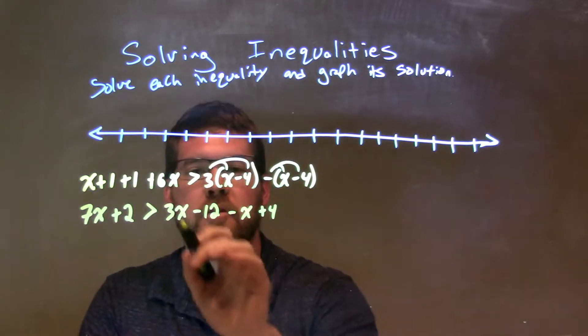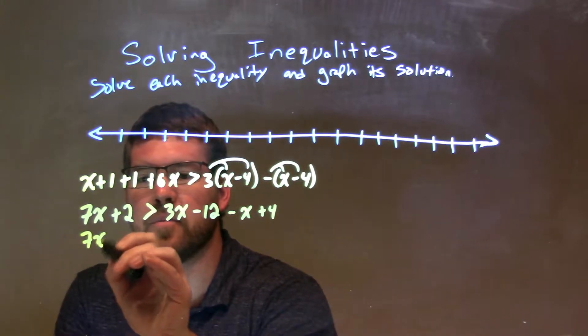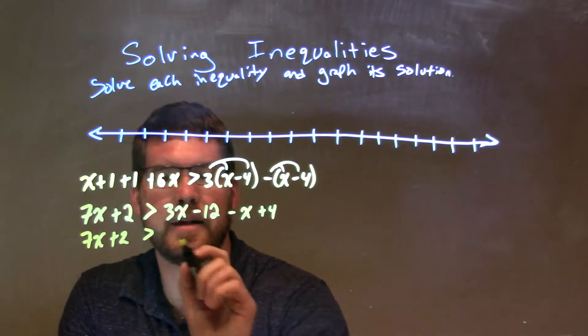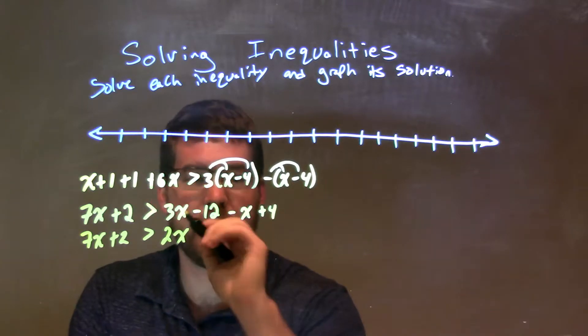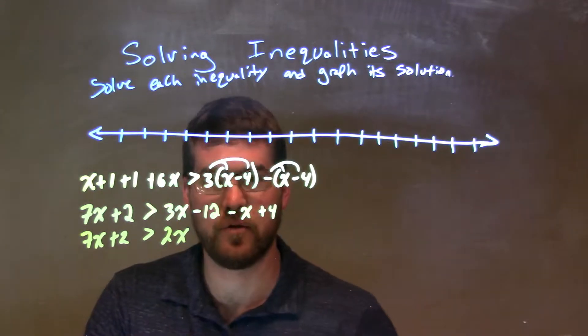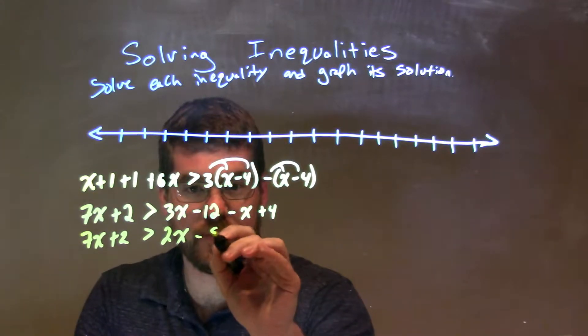So, the right-hand side, let's go simplify again. It's 7x plus 2 can stay here on the left, but the right-hand side, let's combine our x's. 3x minus x is 2x, and negative 12 plus 4 is a negative 8.